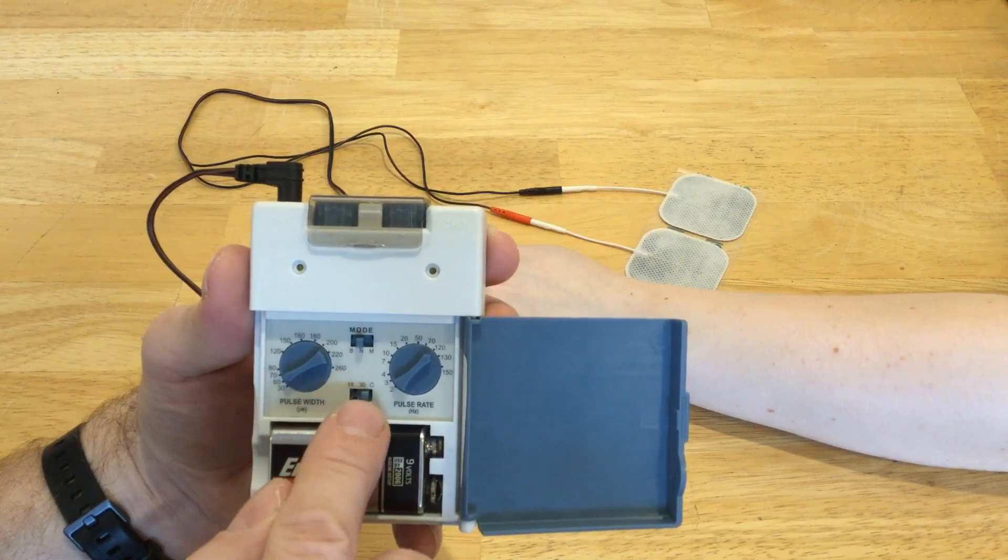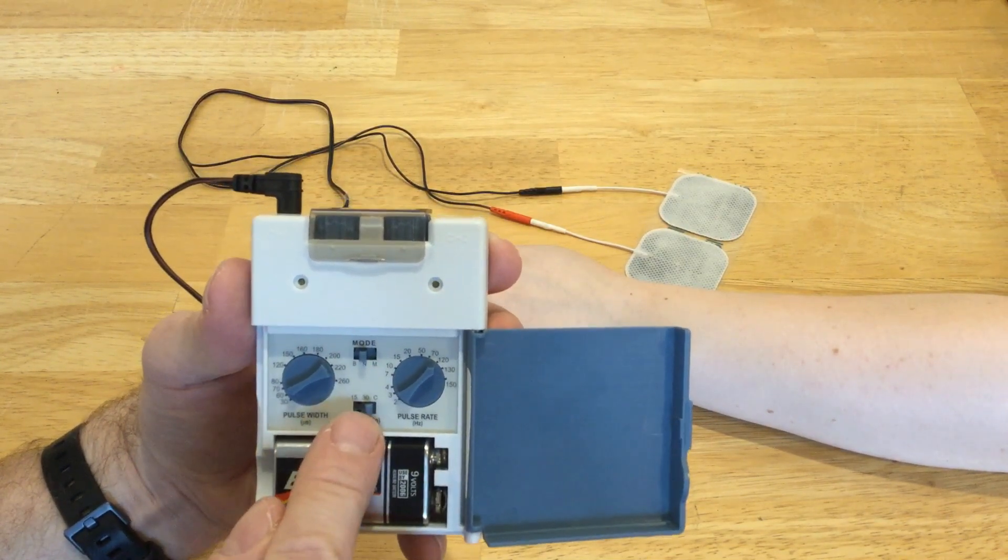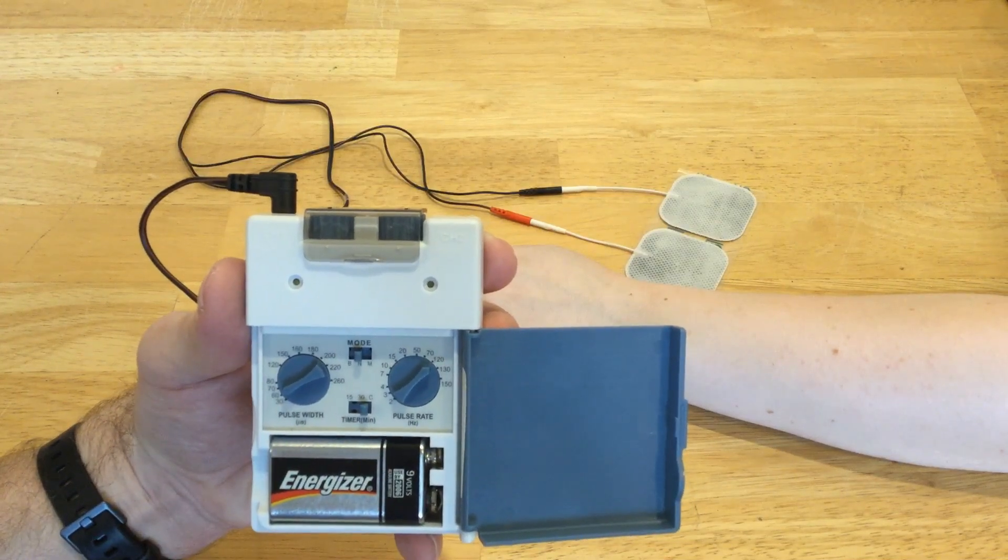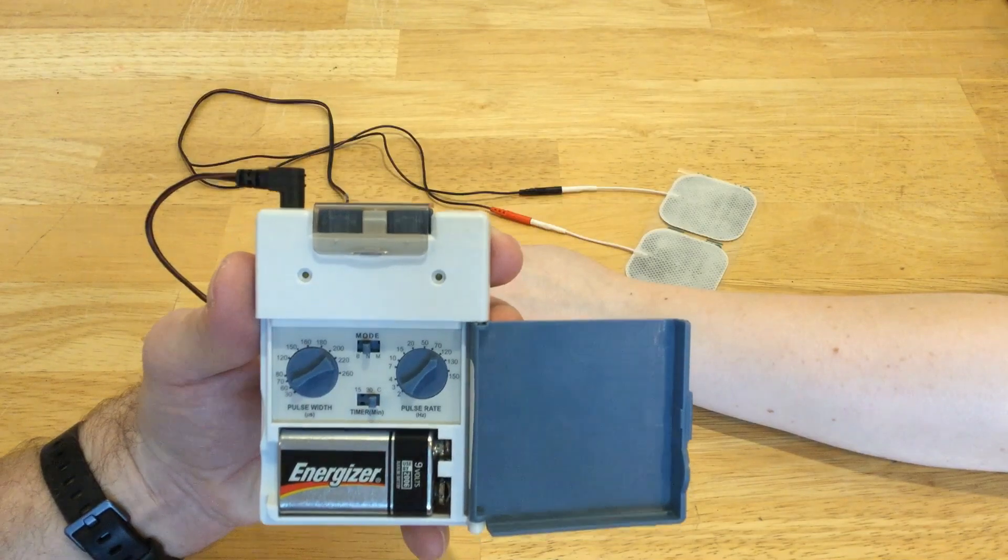As far as the timer goes, it's C for continuous, which is what I have it set at. Or the 30 would shut off after 30 minutes, or the 15 would shut off after 15 minutes.